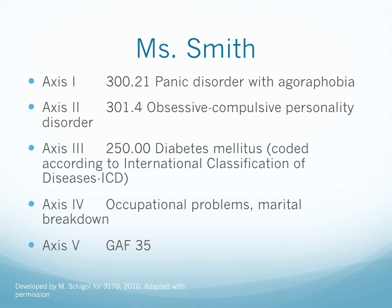Axis 5 is the Global Assessment of Functioning, also known as the GAF score. This score ranges from 0 to 100: 0 to 10 is considered low functioning, and 90 to 100 is considered high functioning. In this example, the client has a GAF score of 35, which indicates significant impairment in work and relationships, speaking to the level of functioning in social, occupational, and psychological spheres. However, the GAF score is probably one of the least understood and most misused parts of the multi-axial system. It doesn't measure disability well or indicate what areas of the patient's life require attention — it's just a number on the page, and it can be very subjective.